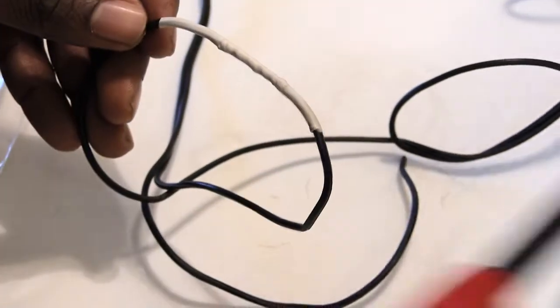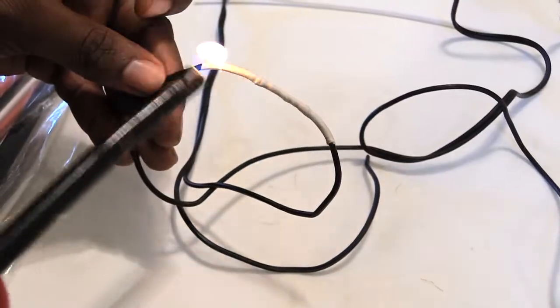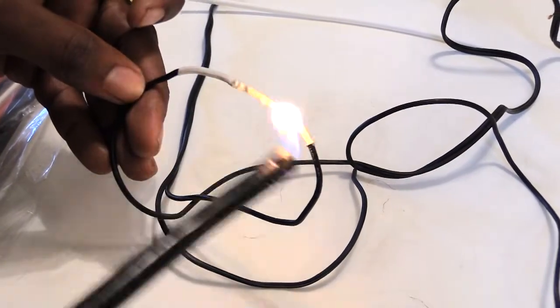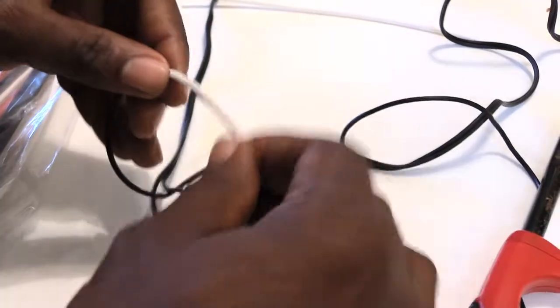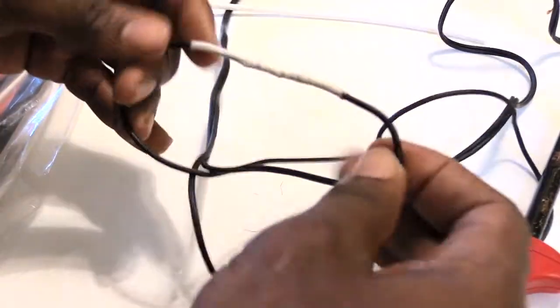Just like that. Now you got a nice strong connection and your wire pretty much is back together and it's protected with the heat shrink tubing.